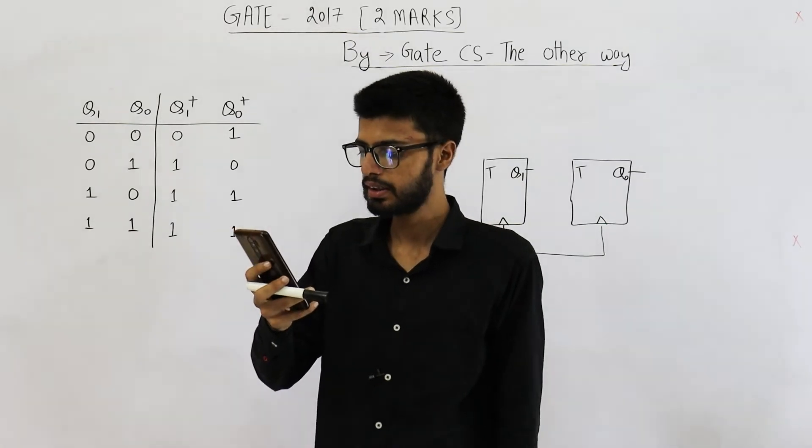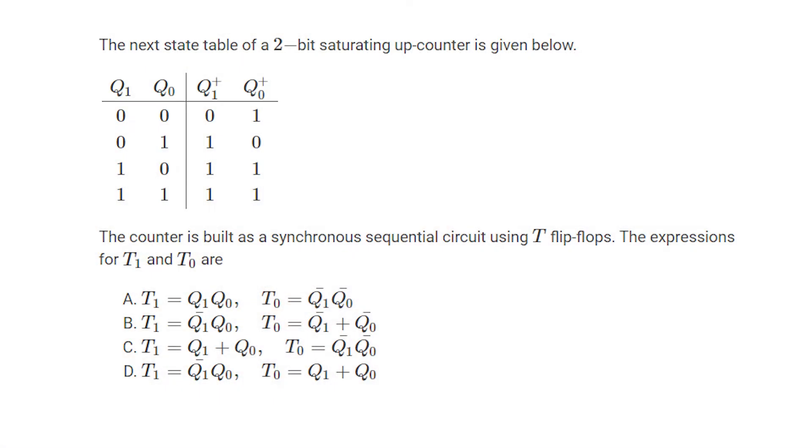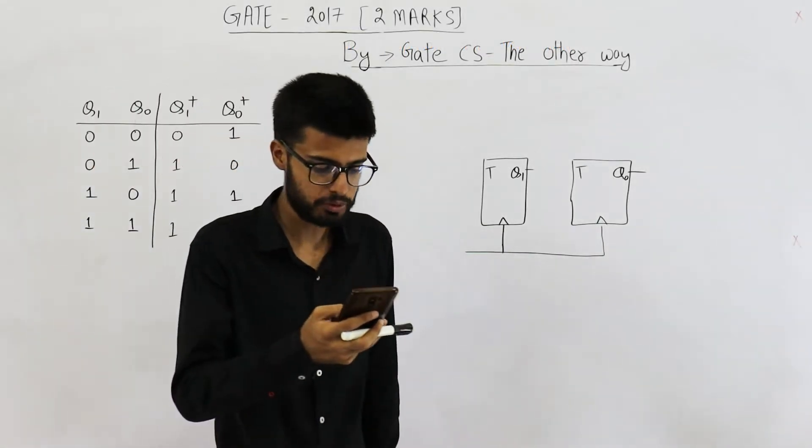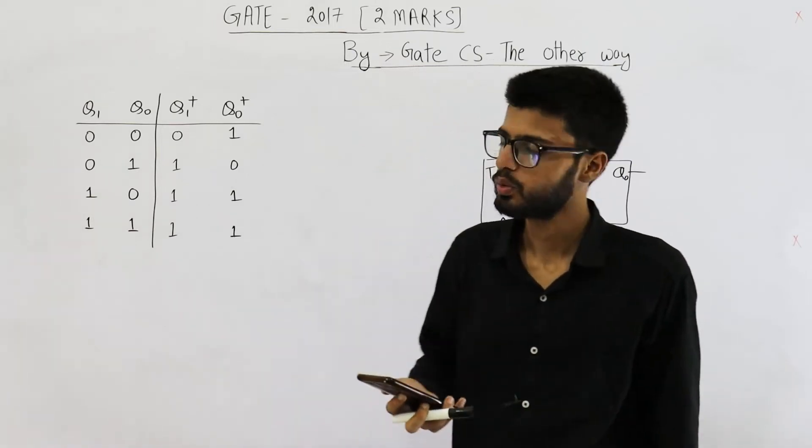It says, the next table of a 2-bit saturating up counter is given below. The counter is built as a synchronous sequential circuit using T flip-flops. The expressions for T1 and T0 are, you can see they have given you 4 options. So let us solve this one.